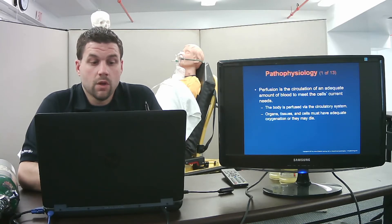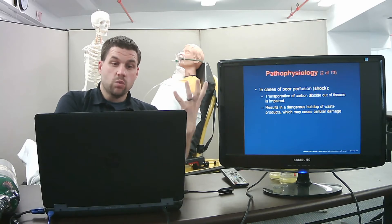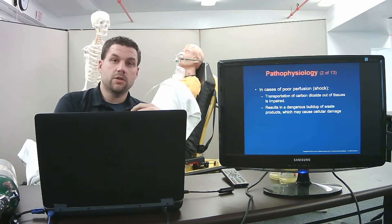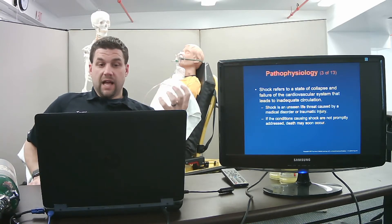Perfusion is the circulation of an adequate amount of blood to meet the cells' current needs. Our organs, tissues, and cells need adequate oxygenation or we get cellular death. In cases of poor perfusion like shock, the transportation of carbon dioxide out of the tissue is impaired, leading to a buildup of excess waste products that causes cellular damage.